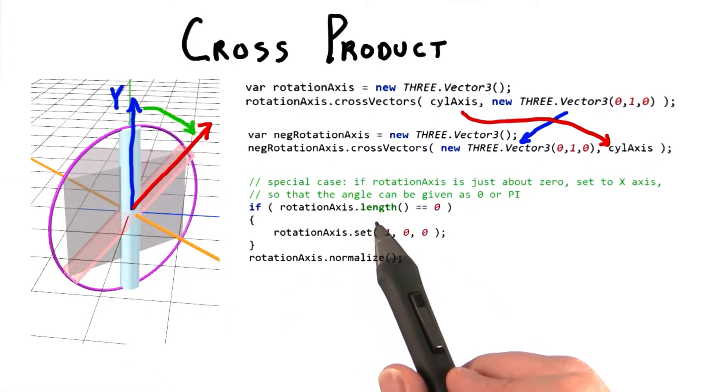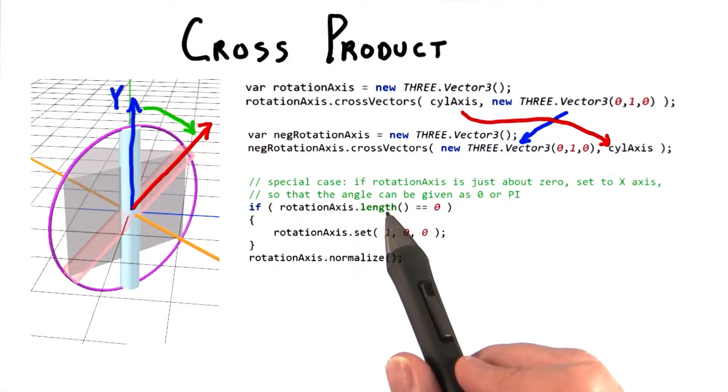Recall how the dot product gives us the cosine between two vectors. The length of the cross product result is in fact proportional to the sine of the angle between the two vectors.